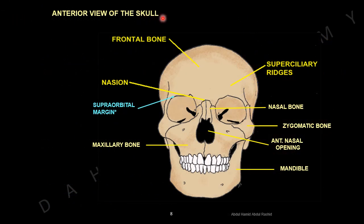Anterior view of the skull. This is the frontal bone, zygomatic bone, maxillary bones, and mandible. These are the orbital cavities and the nasal cavity. Two nasal bones are above the nasal cavity, articulated to the frontal bone. The junction between the nasal and frontal bone at the center is called the nasion. Above the left orbital cavity there is a ridge called the supraciliary ridge, and the margin around the orbit is the supra-orbital margin.